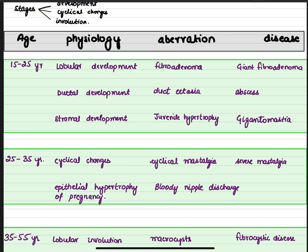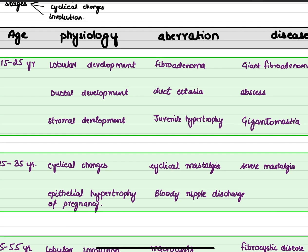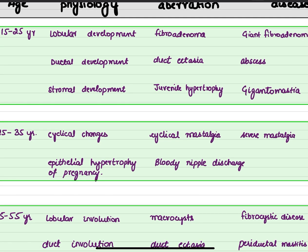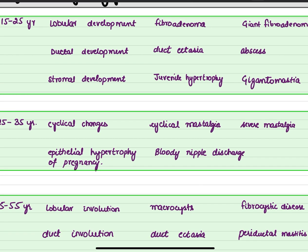During 15 to 25 years there is lobular, ductal, and stromal development. After that there is a series of cyclical changes in the breast during 25 to 35 years, and after 35 years the breast undergoes involution. So let's discuss these stages separately.